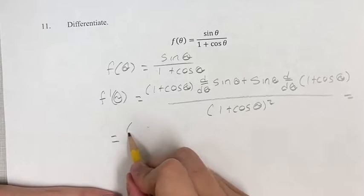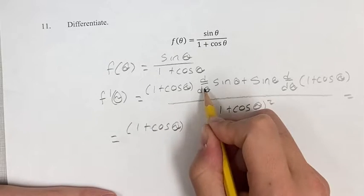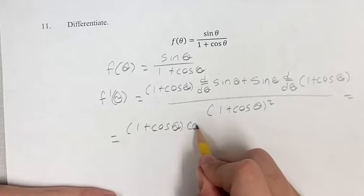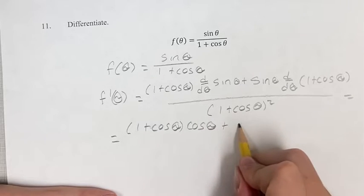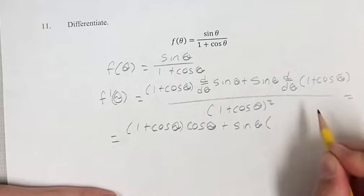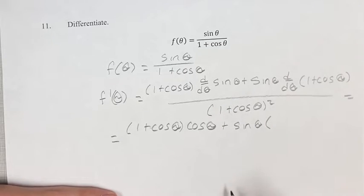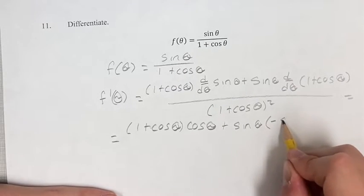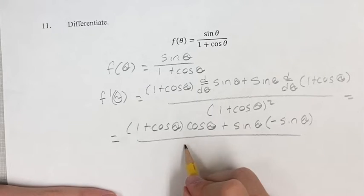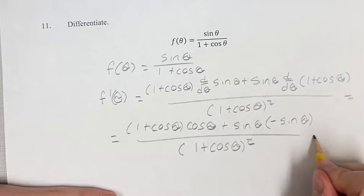So we have 1 plus cosine theta times the derivative of sine theta, which is cosine theta. This is plus sine theta times the derivative of 1, which is just 0, so you can ignore it. The derivative of cosine theta is negative sine theta. This is all over 1 plus cosine theta squared.